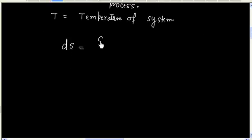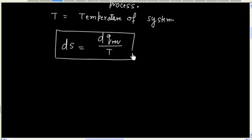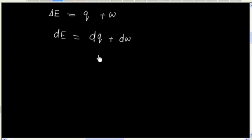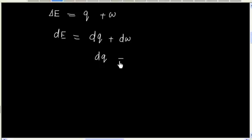We have the formula dS equals dQ reversible divided by temperature. We can apply the first law of thermodynamics: delta E equals Q plus W. We can also write the same formula for small quantities: dE equals dQ plus dW. From here, we can write dQ equals dE minus dW.